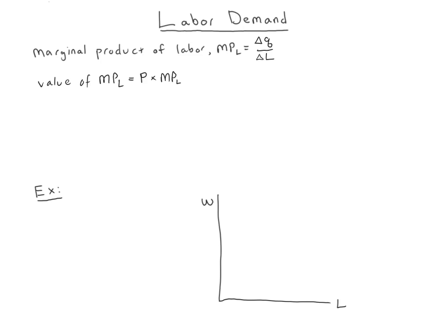This tells us in dollar terms how much that extra output is worth. If I hire one more worker, what is going to be my extra output, and then multiply that by the price to tell me how much that extra output is worth. So that's basically how much extra money the firm has brought in.